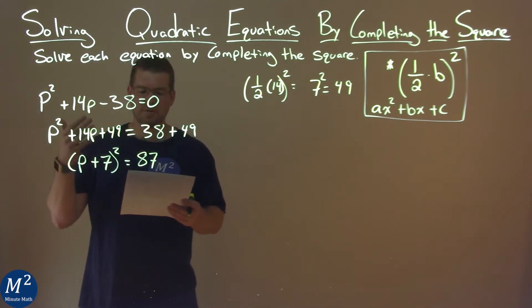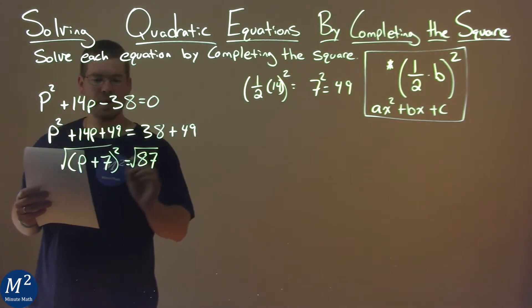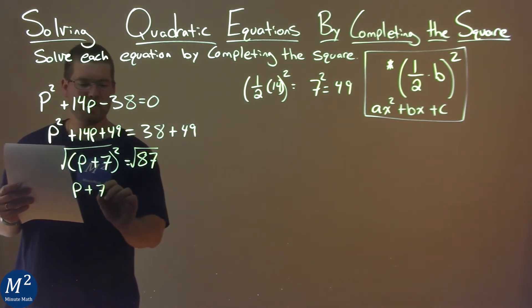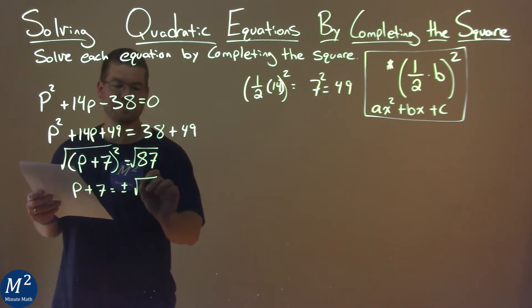So now we have to solve for p. We take the square root of both sides here, and we have p plus 7 equals a plus or minus the square root of 87.